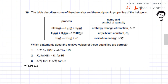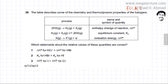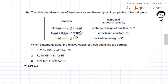A table is given where a process is described and the name and symbol of the quantity is given. The first reaction has X as a halogen — fluorine, bromine, chlorine, or iodine — and the enthalpy change of this reaction is delta H. Another reaction shows H2 reacting with a halogen to produce a hydrogen halide, and the equilibrium constant Kp is given. The last one is ionization energy, where a halogen loses an electron.